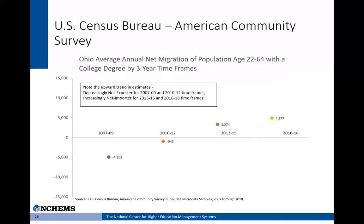I'm going to present a couple of data charts that demonstrate the importance of recognizing and using the margins of error included with published American Community Survey estimates. On this chart we have four data points plotted from ACS public use microdata samples, representing the average annual net migration of college degree holders aged 22 to 64 by three-year time frame, from 2007–09 through 2016–18. These data are for Ohio, and the points have been plotted by three-year time frame to help increase sample size and reduce statistical error. What we conclude just looking at the plot is a nice upward trend in net migration — Ohio is changing from a net exporter of college degree holders in earlier time frames to a net importer in more current time frames.